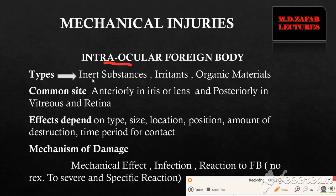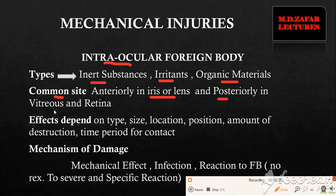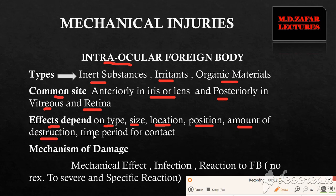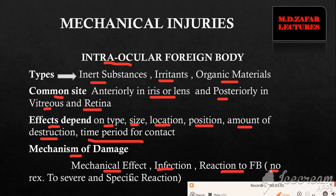For intraocular foreign bodies, the types are similarly inert substances, irritants, and organic materials, but the common sites differ. If present in the anterior part of the eye it will damage the iris and lens; if present posteriorly it will affect the vitreous humor and retina. The effects depend upon the type of material, its size, whether present anteriorly or posteriorly, its position, the amount of destruction, and the time period of contact. These effects are produced by mechanical effect from the mere presence of the foreign body, infection following its entry, and the foreign body reaction, which can range from no reaction to severe specific reactions.